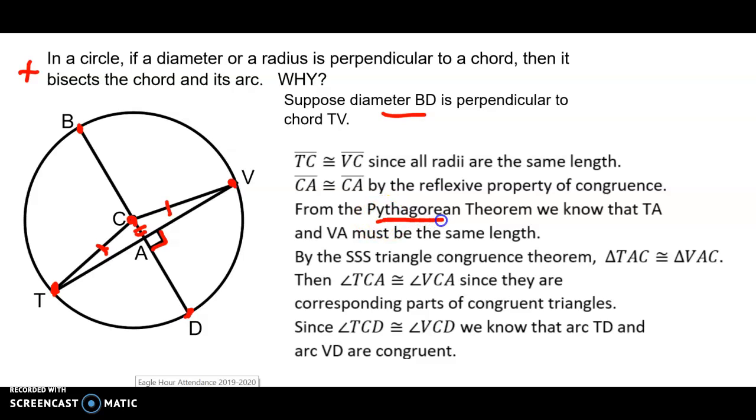From the Pythagorean theorem, it follows that TA and VA must be the same length because B squared will equal C squared minus A squared. And they both have the same hypotenuse and they share a leg.